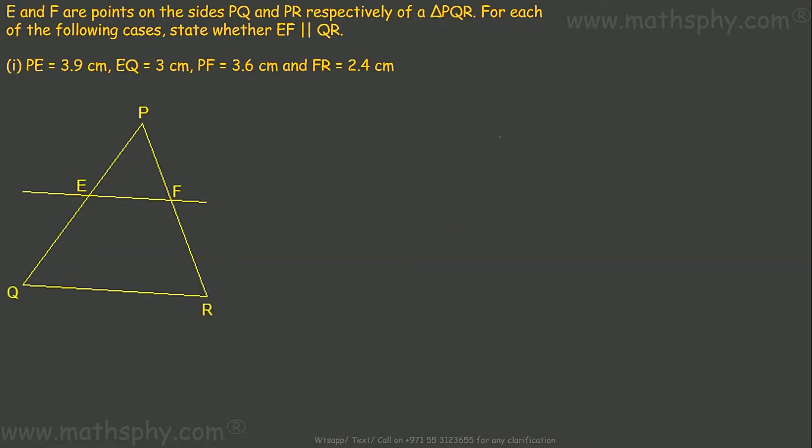Very first is this. So I will see if PE over EQ is equal to PF over FR then EF will be parallel to QR as per the triangle similarity theorem. Converse of triangle similarity theorem. Alright. If this is proven then EF is parallel to QR.